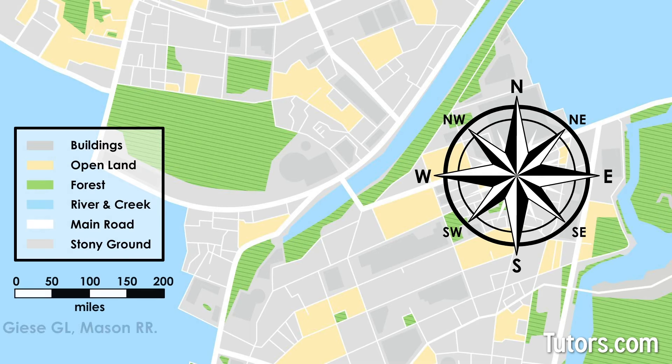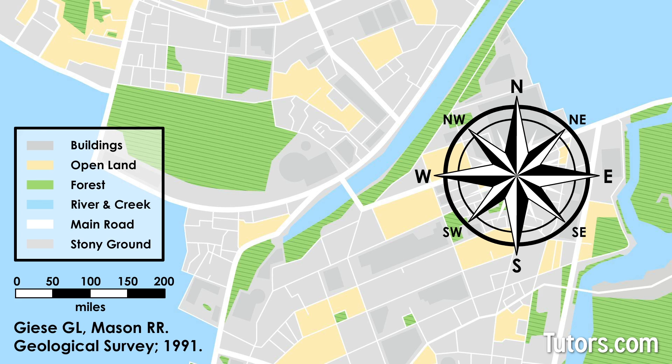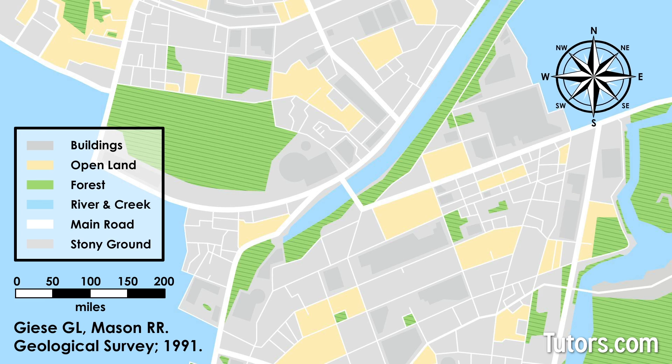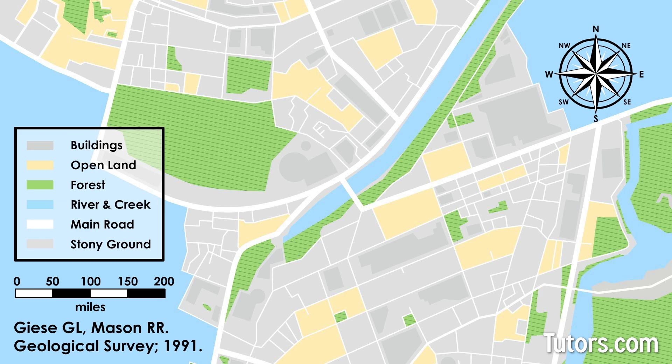Unlike all the other symbols on the map, the compass rose does not usually appear in the key or legend. It is usually drawn in an unimportant area, like an ocean or vast desert, so that it does not cover locations.